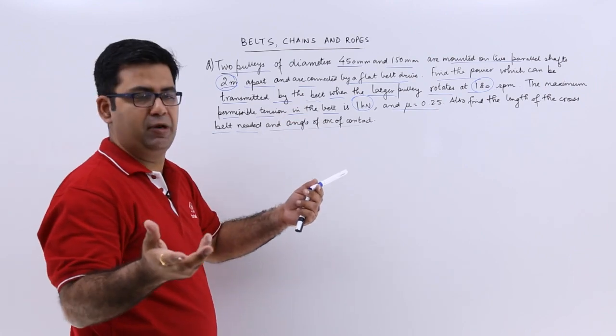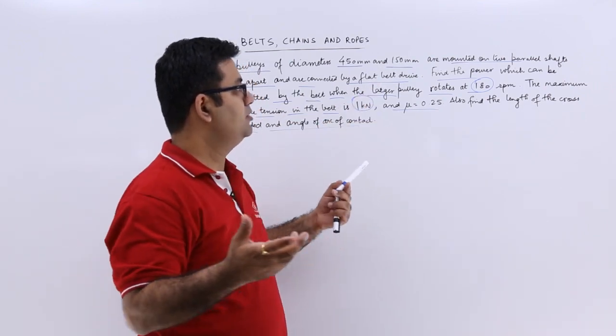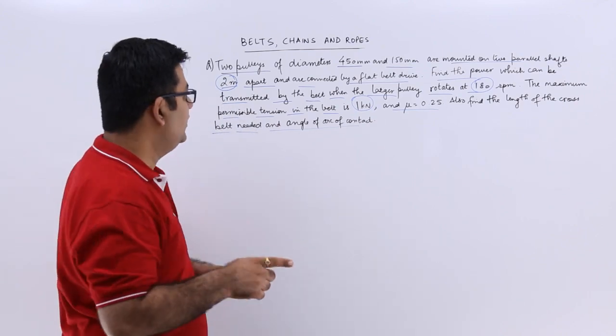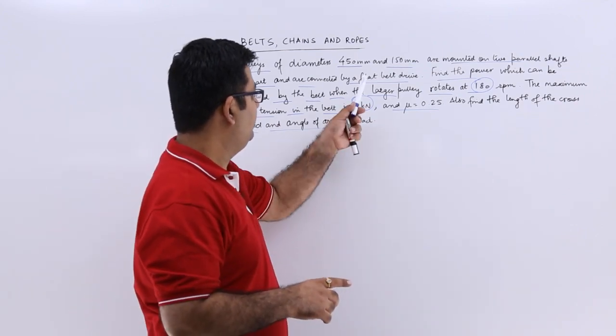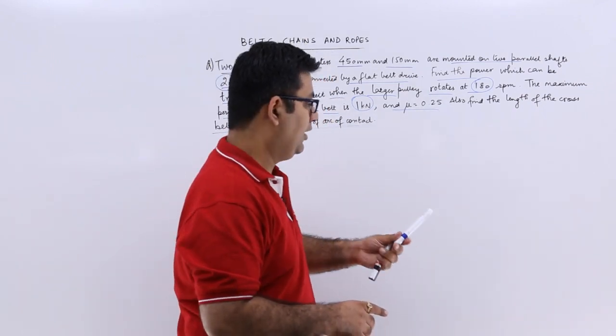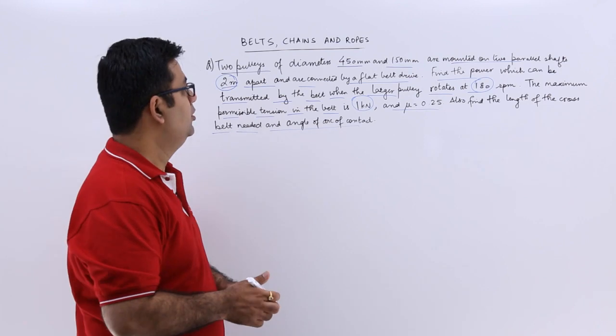So 450 mm means bigger pulley, 150 means smaller pulley. The distance between the center is 2 meters. It runs with a flat belt drive. Larger pulley rotates at 180 rpm.